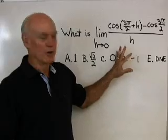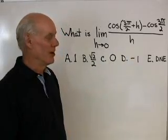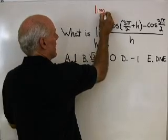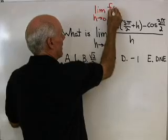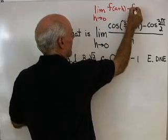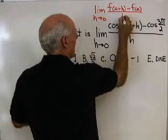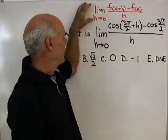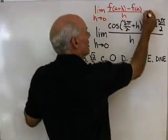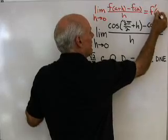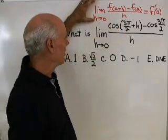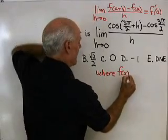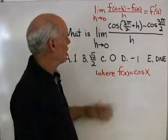The quickest way to work this problem — and the way they want you to do it — is to recognize that this is the limit formula for the derivative. It's the definition: the limit as h goes to 0 of f(a+h) minus f(a), all divided by h, for the function cosine. This expression matches that form, and that is the definition of f prime evaluated at x equals a, where f(x) equals cosine x.